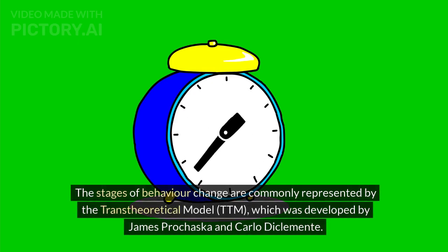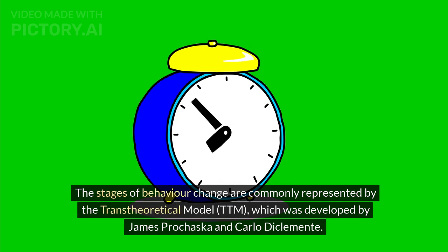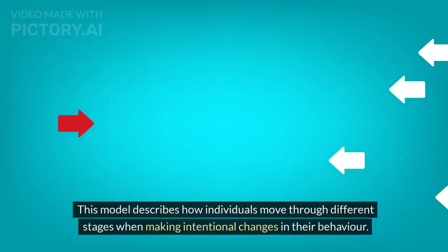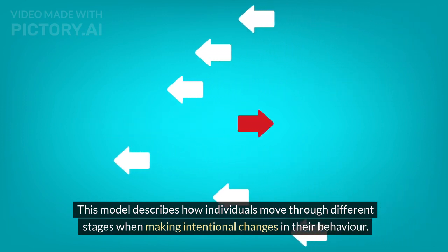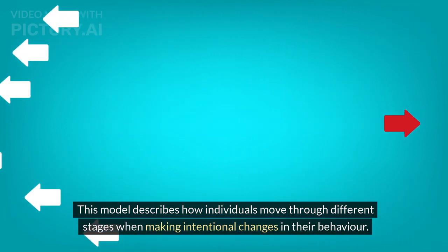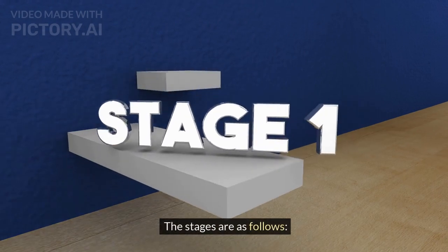The stages of behavior change are commonly represented by the trans-theoretical model, TTM, which was developed by James Prochaska and Carlo DiClemente. This model describes how individuals move through different stages when making intentional changes in their behavior. The stages are as follows.